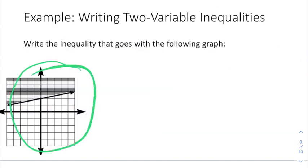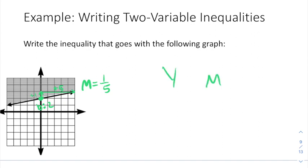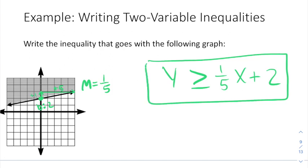We also need to be able to start with a graph and turn it into an equation. To write the equation, we need to figure out the slope and y-intercept. My y-intercept appears to be at 2. And I'm going up 1 and over 5 to get to another point. Making my slope 1/5. So if we were writing the equation, we would say y equals mx plus b. So y equals 1/5 x plus 2. But for an inequality, we've got to figure out what sign goes in the middle. Well, we shaded above the line. So it's a greater than. And our line is solid. So it must be a greater than or equal to line. If it were dashed, it would just be greater than. And this is the equation that goes with that graph.